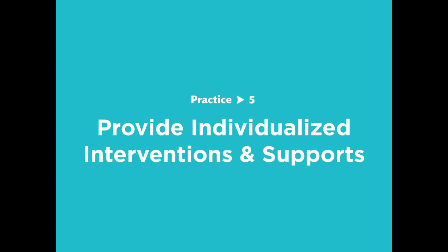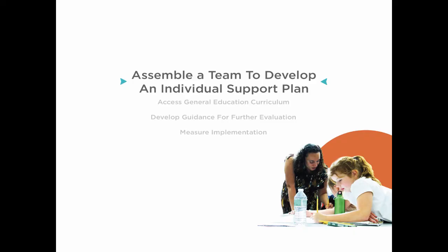Practice 5: Create a process for providing individualized interventions and supports. Assemble a team to develop an individualized support plan—this team needs to include the student and family and may involve planning with other individuals and or agencies. Evaluate the different teaming structures in place around individual students: the degree to which the process involves appropriate members, results in plans that are robust and adequate at addressing individual needs for core and intervention support, and how the process appropriately assists teams when other actions are warranted.